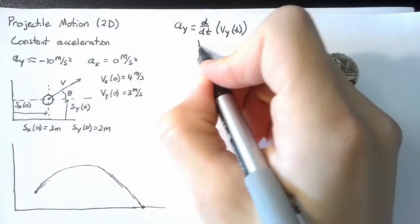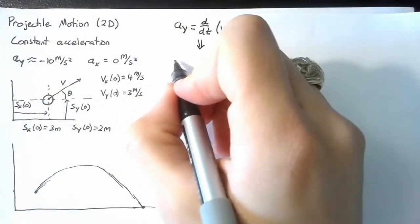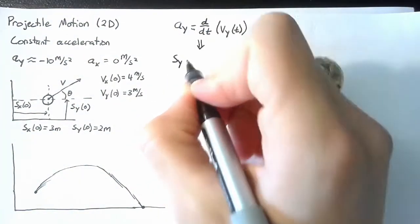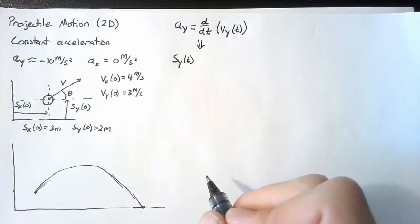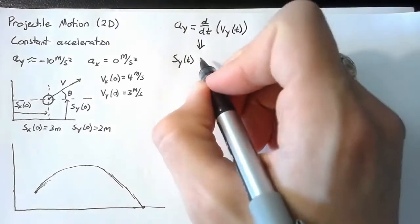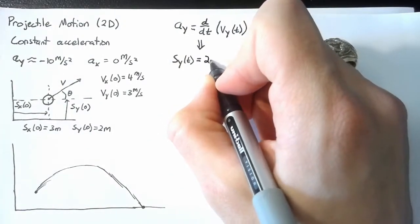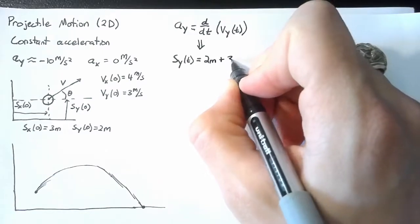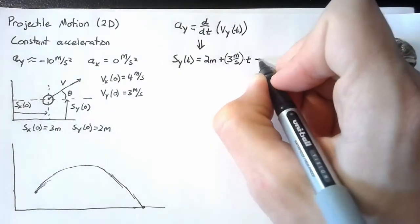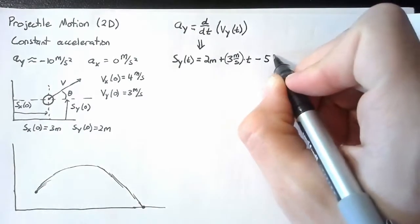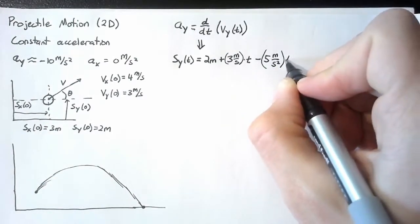And we went through the process of finding the kinematic equations from this in the previous video. So we can skip straight to the answer. The position at time t is going to be equal to the initial position, 2 meters, plus our initial velocity multiplied by our time t minus half of our constant acceleration multiplied by t squared.